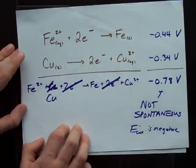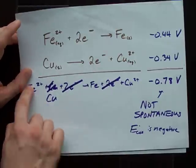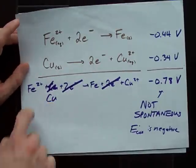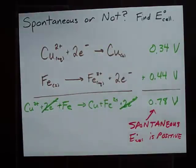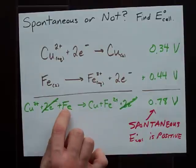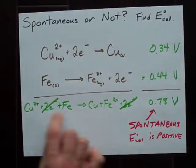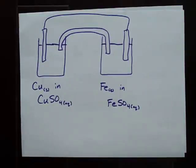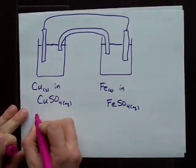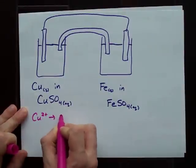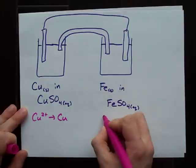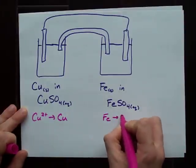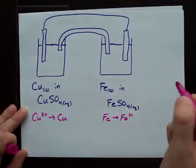So to wrap this up, it's not spontaneous when you mix solid copper with iron 2+, but it is spontaneous to have iron become iron 2+ and copper 2+ become copper. So what's happening in this cell is that copper 2+ is becoming copper and iron is becoming iron 2+.